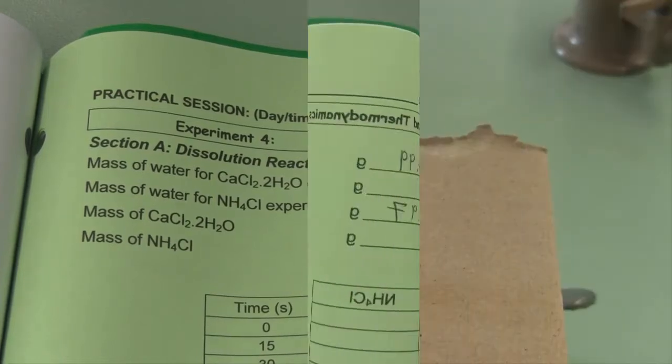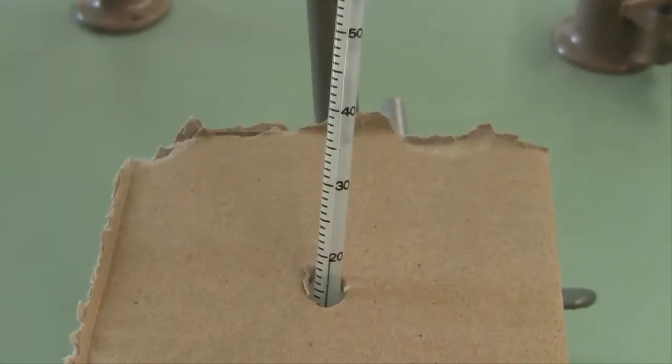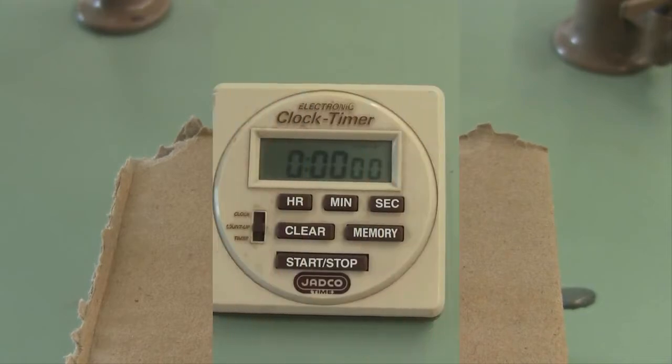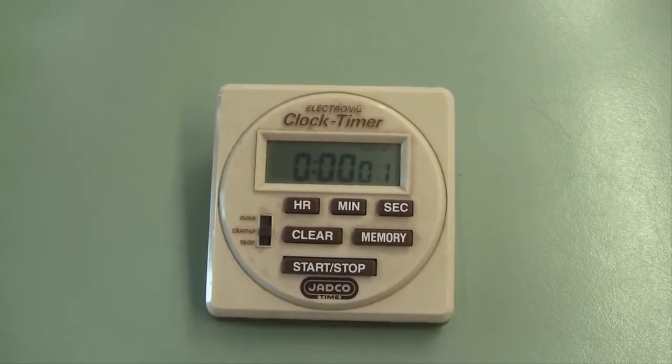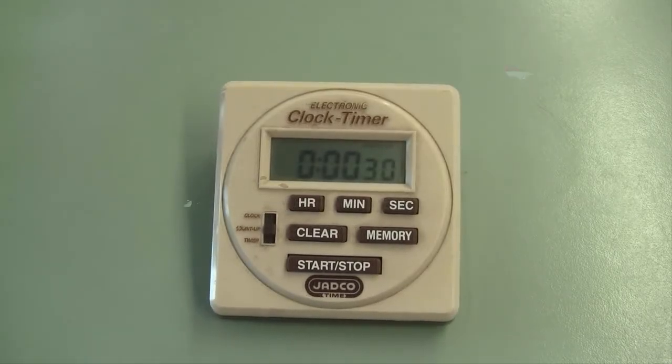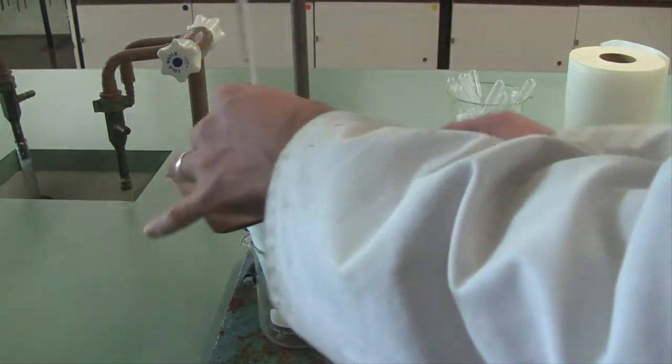Record an initial temperature, and then start your timer. Wait for 30 seconds to elapse. At that point in time you can add your ionic solid to your calorimeter, and then mix thoroughly to make sure the salt completely dissolves.